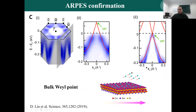Later, we tried doping the sample to tune the Fermi level across the Fermi arc. After tuning, we really observed the linear crossing point, which is directly related to the Weyl point. This is a direct observation of the three-dimensional bulk Weyl point in Co3Sn2S2.